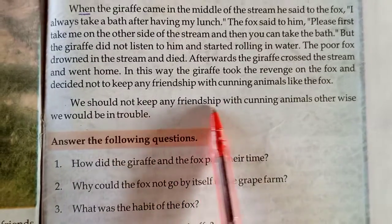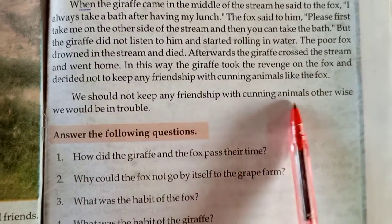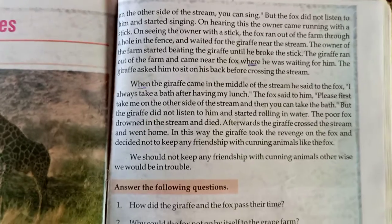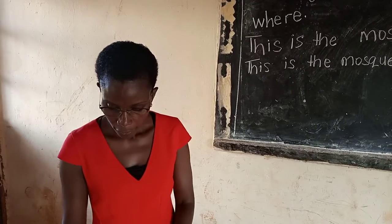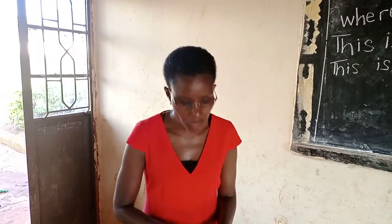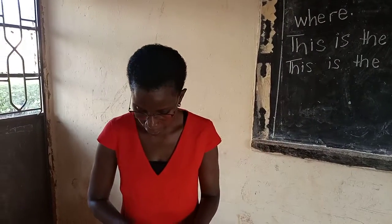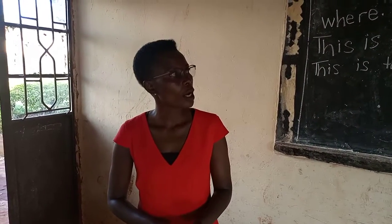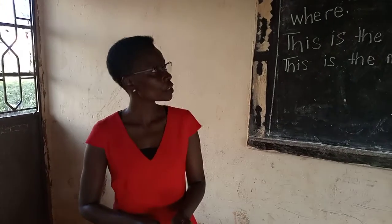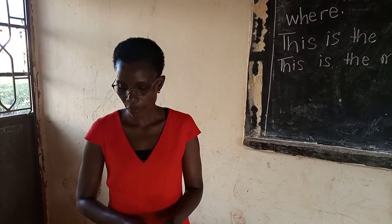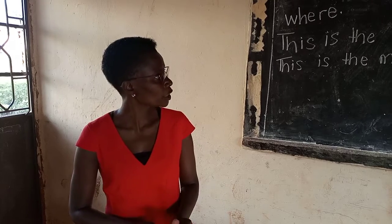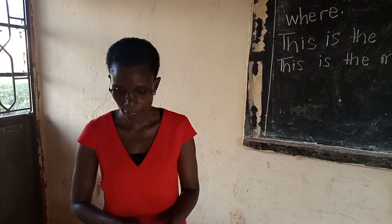We should not keep any friendship with cunning animals. Otherwise, we would get in trouble. Those of us who read with teacher, thank you very much, and I love you for that. Now, according to our story, there are some conjunctions. How many of us can identify the conjunctions that were in the story?